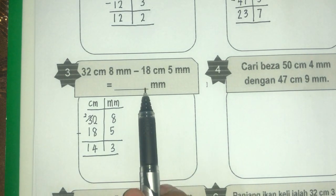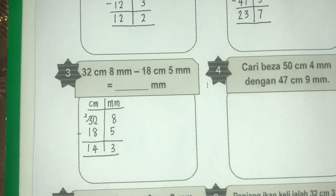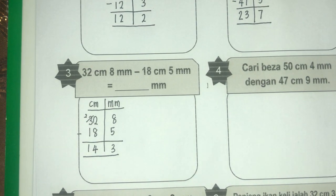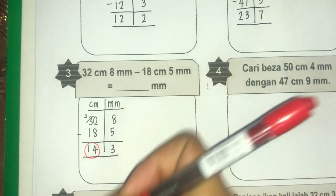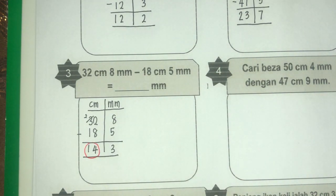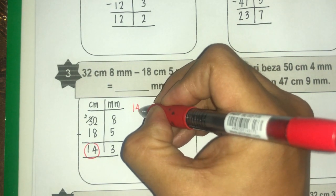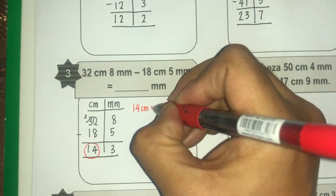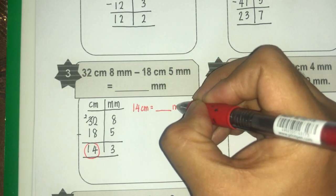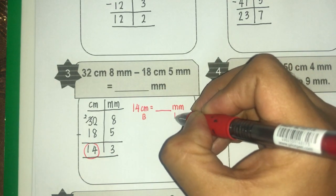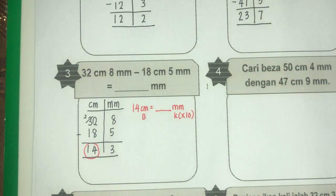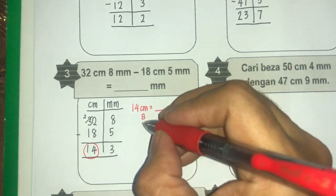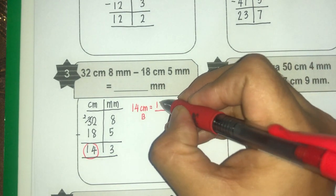Sekarang soalan nak jawapan dalam mm sahaja. Oleh itu kita perlu buat sesuatu kepada cm tu. Di mana 14 cm ni kita kena tukar dia jadi mm. Bermaksud besar kepada kecil, jadi darab. Darab 10, sebab 1 cm sama dengan 10 mm. Jadi 14 darab 10 ialah 140.